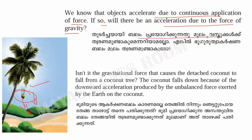If you don't think there is an acceleration due to the force of gravity — isn't it the gravitational force that causes the detached coconut to fall from a coconut tree? The coconut falls down because of the downward acceleration produced by the unbalanced force exerted by the Earth on the coconut.